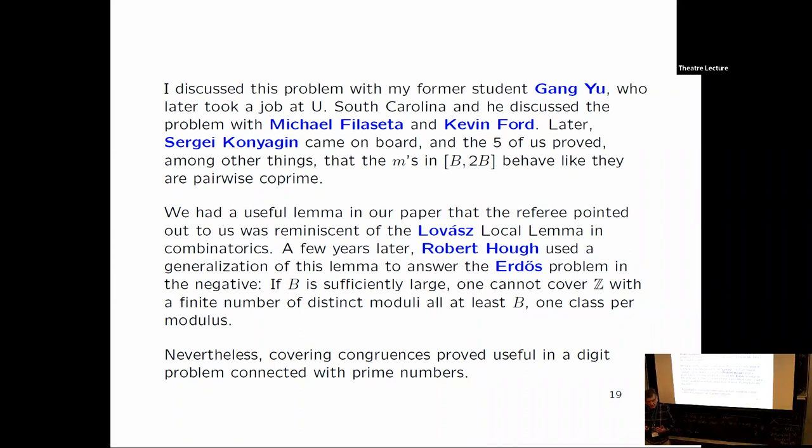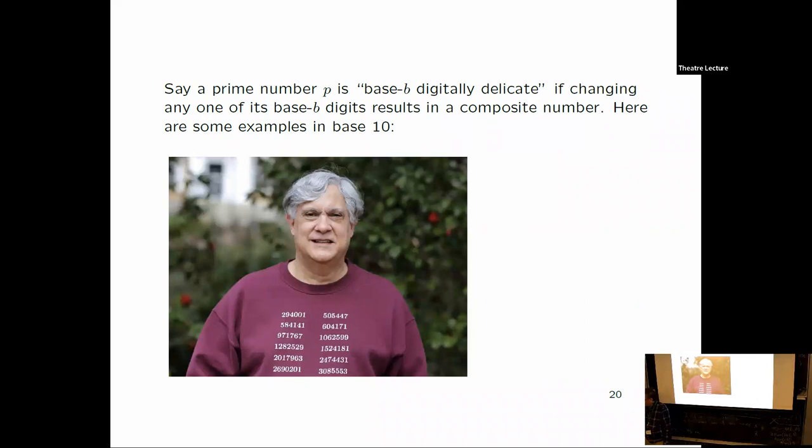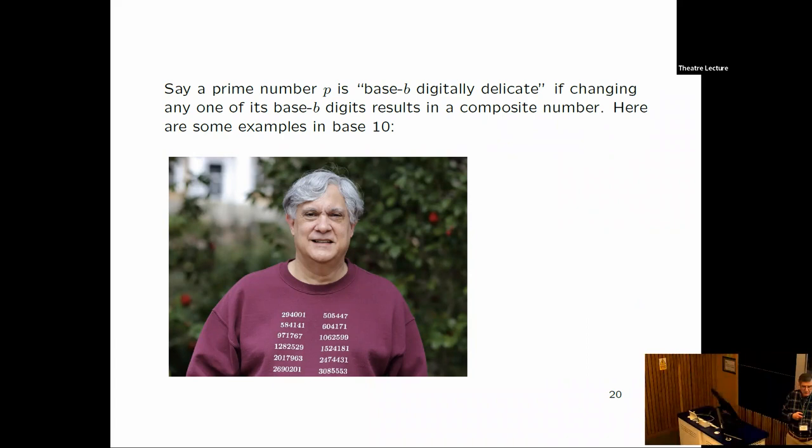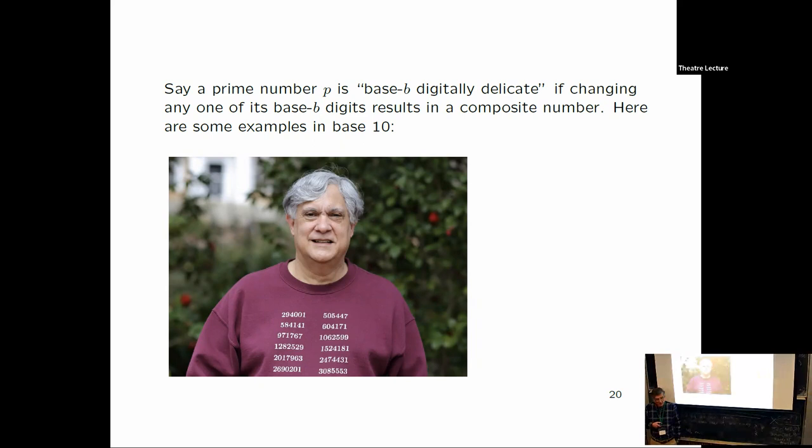So this has nothing to do with digits, or does it? Because it turns out that these covering congruences became very useful in another problem. There's a picture of Michael Fuller. And you could wonder why I mentioned what's on his T-shirt. These are all primes written in base 10. And they are digitally delicate, which is a little difficult to say fast. What does it mean to be digitally delicate? It means if you take any digit in one of these primes and change it to another digit, it'll no longer be prime.